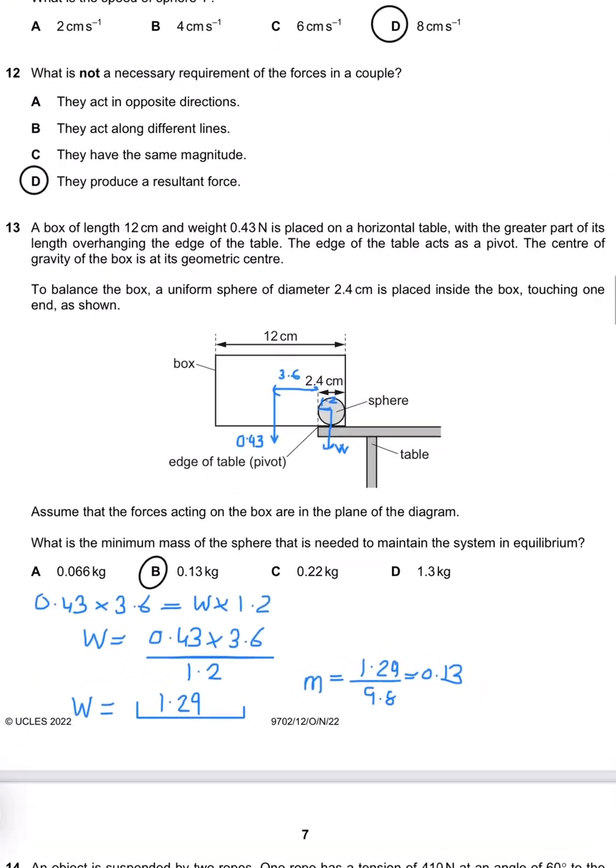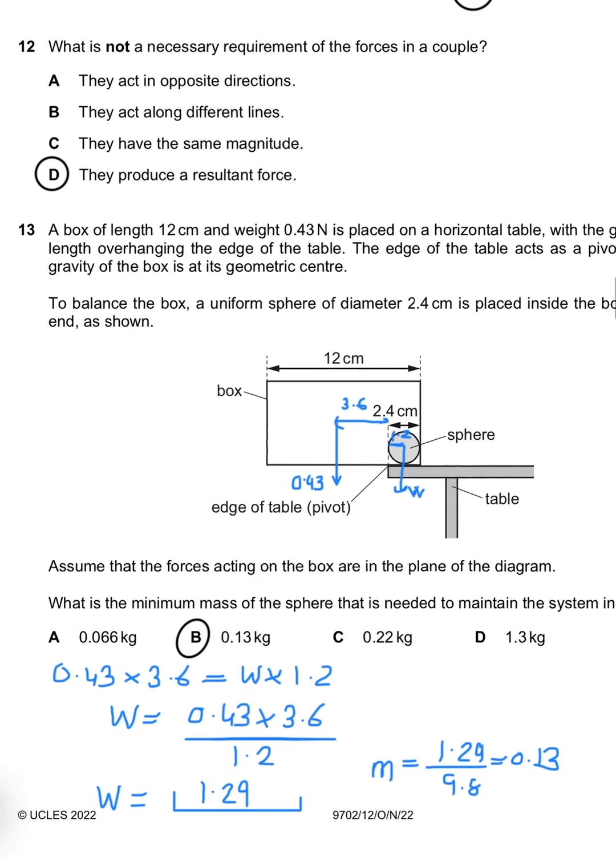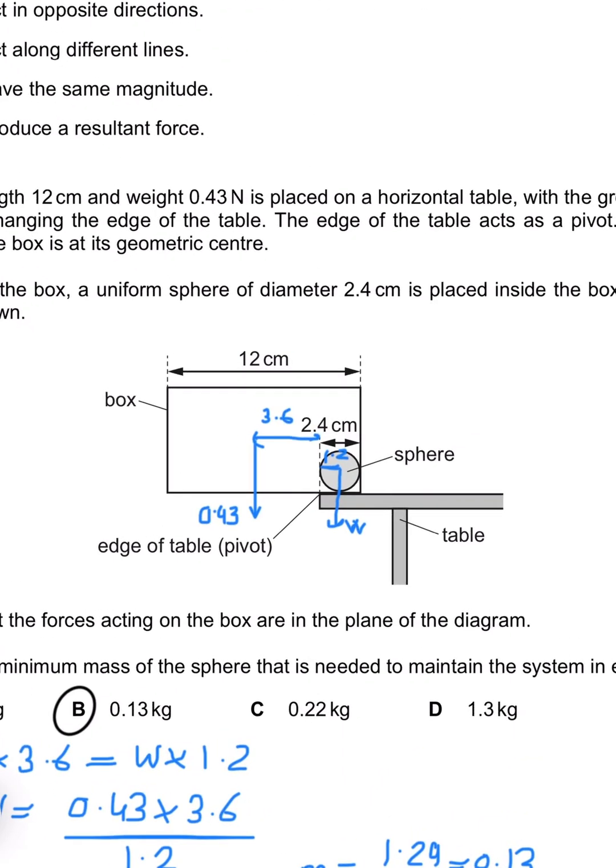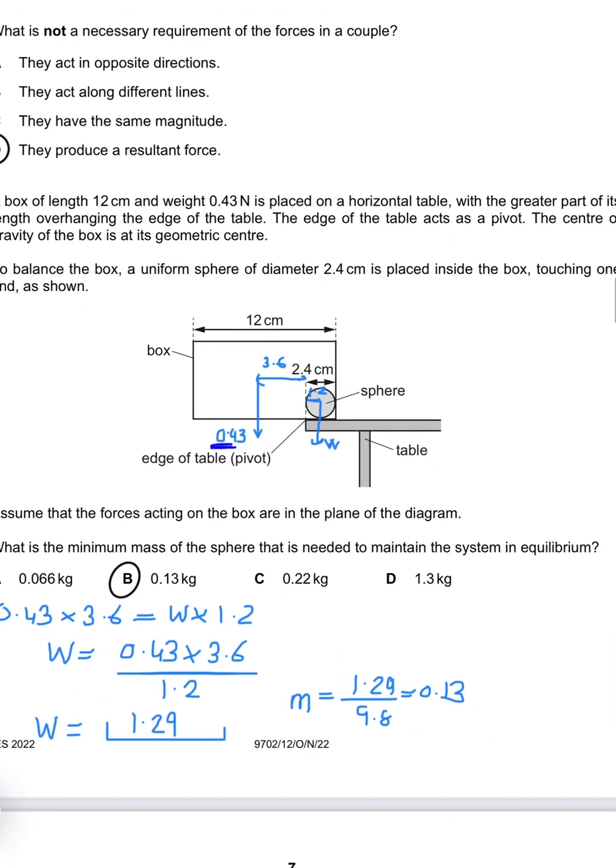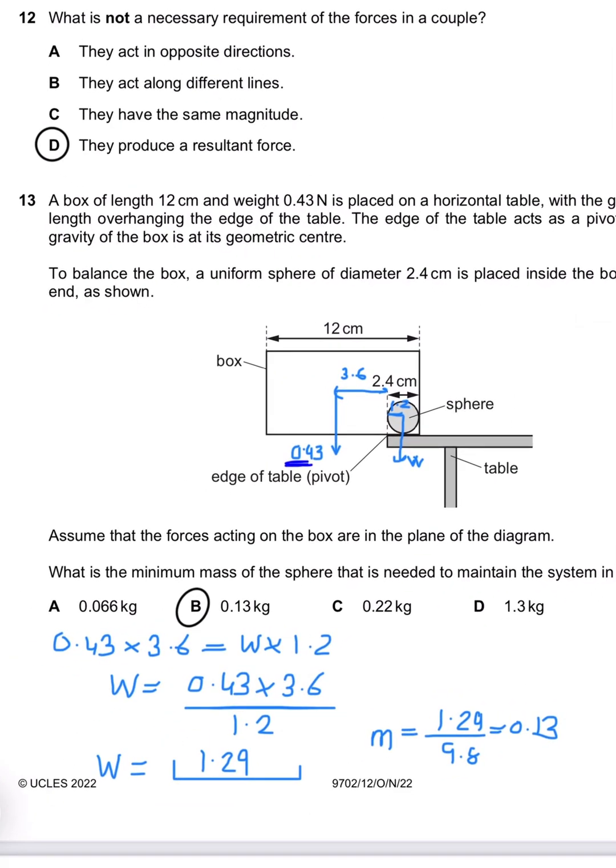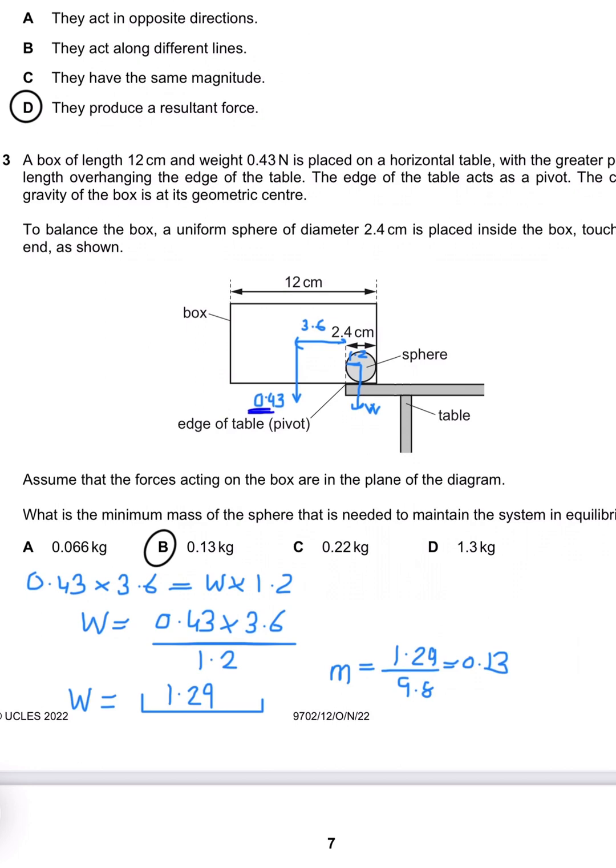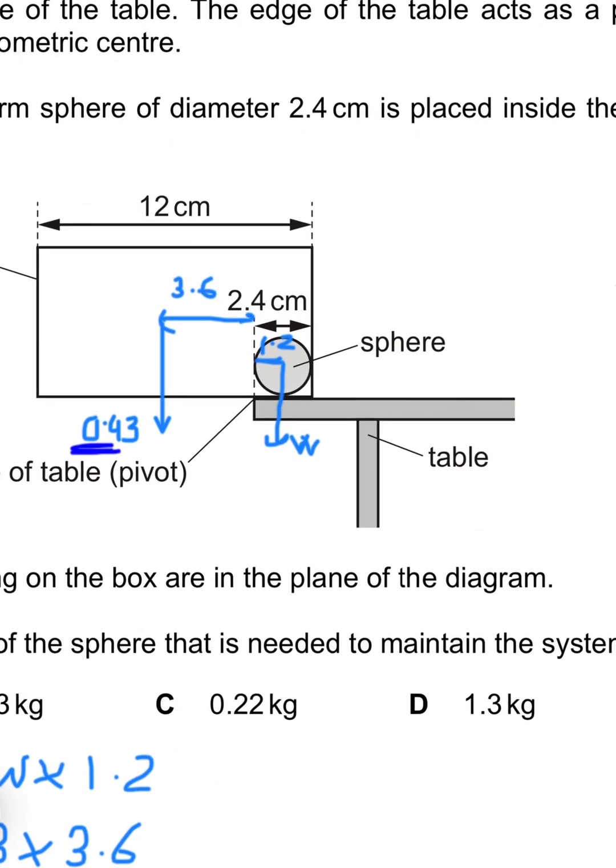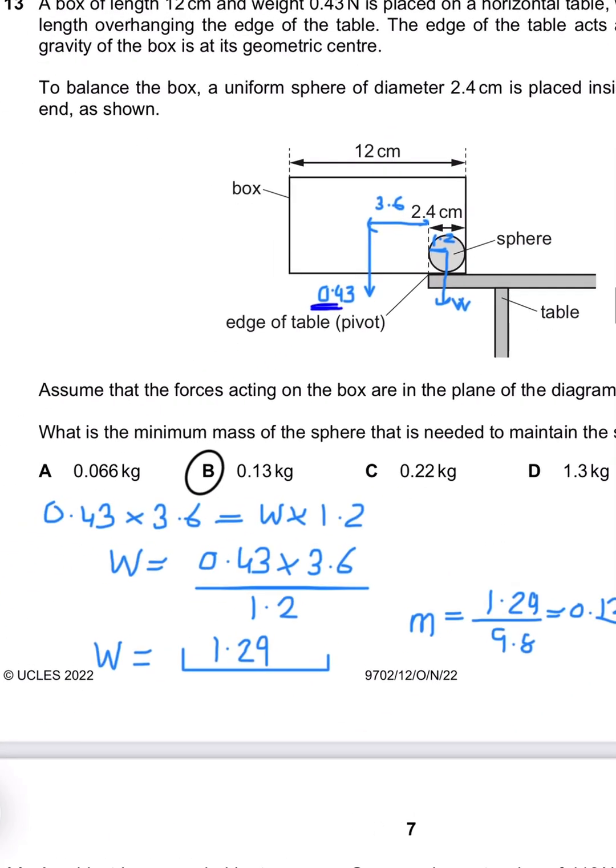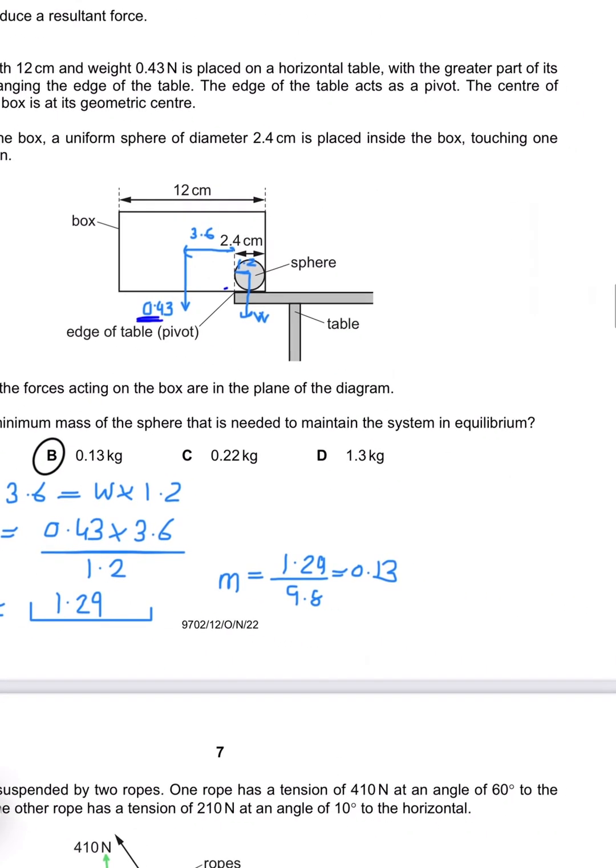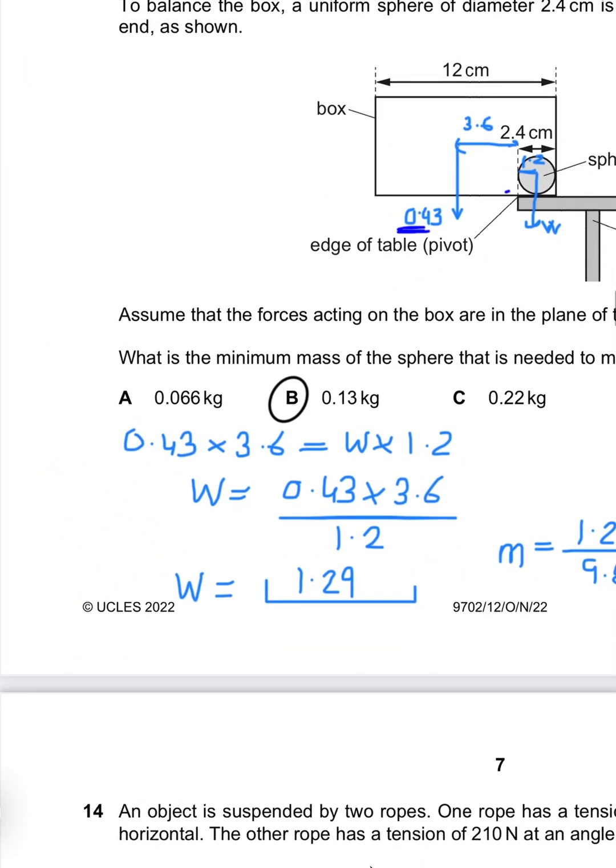Question 13: A box of 12 cm and weight 0.43 newtons. The weight is shown here as horizontal with greater pivot of edge. A uniform sphere of diameter 2.4 cm is placed. What is the mass of the sphere? We need to find the weight of the sphere and apply clockwise equals anticlockwise. 0.43 times 3.6, that's our pivot, equals w times 1.2. Finding w divided by 9.8 gives us 0.13 kg. So B is the appropriate answer.